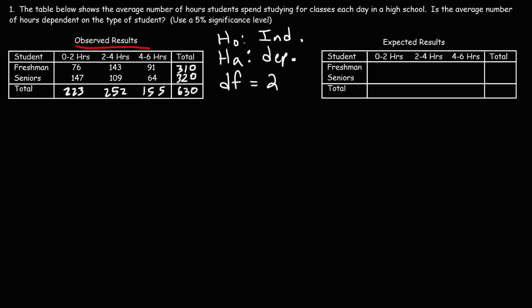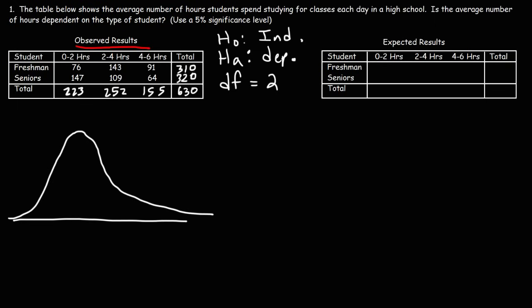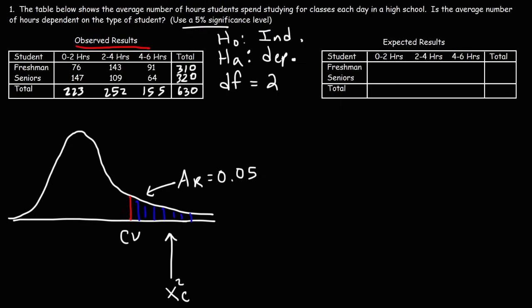The test of independence is typically a right-tail test, so this is going to be the shape of our chi-square distribution. This is the location of our critical value, and this is the rejection region. The area to the right — the area of the rejection region — is going to be alpha, which is 0.05. We need to determine our critical chi-square value and compare it to our calculated chi-square value. If the calculated value falls in the rejection region, we reject the null hypothesis; if it falls below the critical value, we do not reject it.